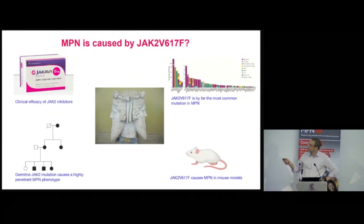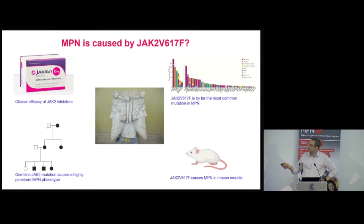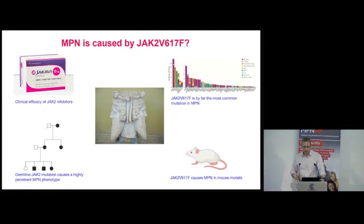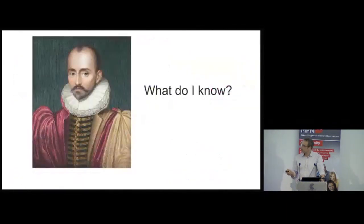We know this is a very common mutation in MPN. We know if you develop inhibitors against this mutation patients can benefit, and if you put the mutation into model systems in the laboratory it causes a myeloproliferative neoplasm. So surely we know what causes MPN — this mutation is the cause of MPN.